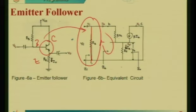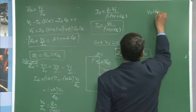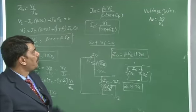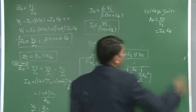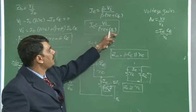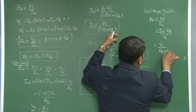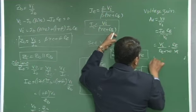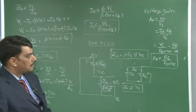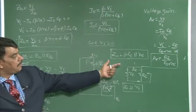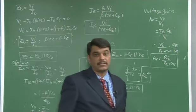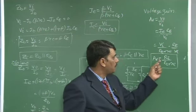Next, we need to determine the voltage gain. Voltage gain Av equals V naught by Vi. V naught is given by Ie times Re divided by Vi. We know Ie equals Vi divided by (Re plus re). Substituting: Av equals Vi/(Re plus re) times Re divided by Vi. This cancels to give Av equals Re divided by (Re plus re). Since re is very small compared to Re, the gain is approximately equal to 1. Therefore, this circuit is known as an emitter follower or voltage follower — the voltage gain is always less than 1.